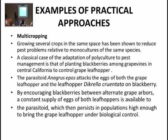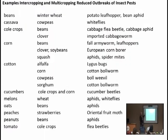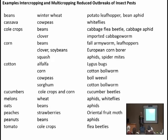مشكلة ليف هوبرز ليست فقط في امتصاص عصارة أوراق العنب، بل في نقله لأمراض عديدة تؤثر على نوعية العنب المستخدم في صناعة النبيذ بكاليفورنيا. وفي الجدول التالي يمكن مشاهدة المحاصيل والآفات التي يمكن مكافحتها والمحاصيل المستخدمة لعمل الزراعة المختلطة (inter-cropping أو multi-cropping).